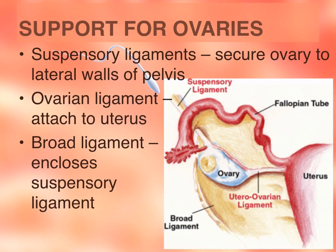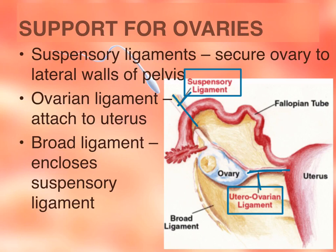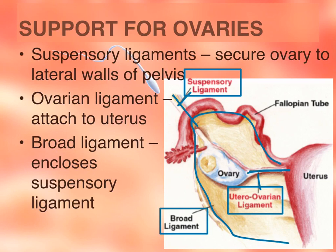Three ligaments support and anchor the ovary within the pelvic cavity. The first is the suspensory ligament, which anchors the ovary to the sides of the pelvic wall. The second is the ovarian ligament, which attaches the ovary to the uterus. The third is the broad ligament — the broad yellow area — which anchors the fallopian tube, houses the ovary, and attaches to the side of the uterus.